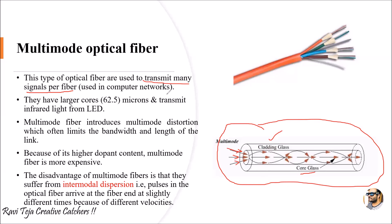Multi-mode optical fiber is used to transmit many signals through a single fiber. This type of application is mainly used in computer networks, LAN systems, and server environments where data processing needs to be high and fast. Multi-mode fibers have a larger core — the mid-course where optical communication occurs — to propagate multiple signals.